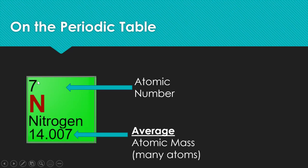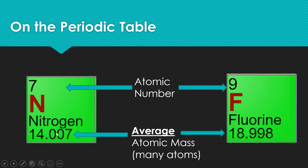On the periodic table, the atomic number — the number of protons — goes up top, and the average atomic mass of many atoms goes down below. Nitrogen has seven protons by definition and an average mass of 14. Fluorine has nine protons and an average atomic mass of nearly 19. The decimal values come from averaging multiple isotopes.